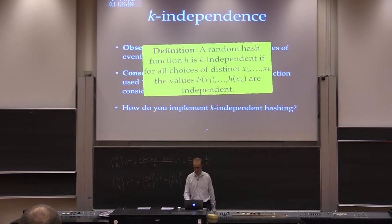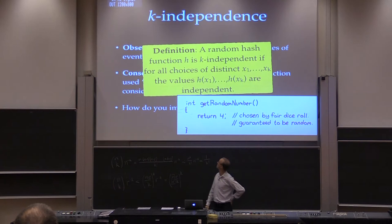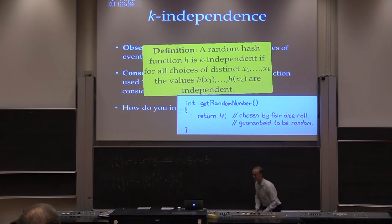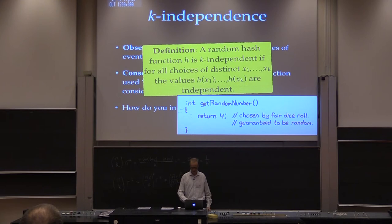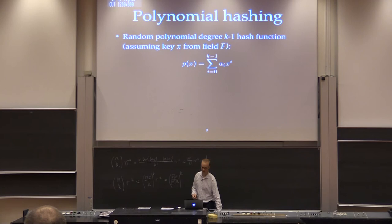What's an easy implementation of 1-independence? This is 1-independence: it's a constant hash function that is constantly equal to a randomly chosen number. So 1-independence is easy. How do you get more than 1-independence? One answer is to use polynomial hashing.